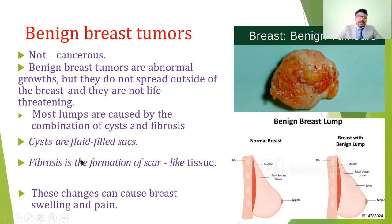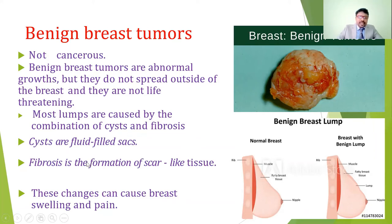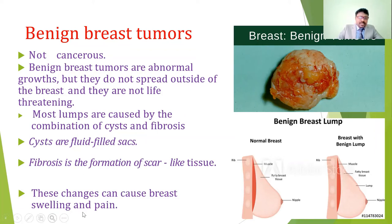Cysts are fluid-filled sacs; fibrosis is the formation of scar-like tissue. These changes can cause breast swelling and pain. Because of this extra growth and compression on breast tissues, tenderness and swelling occur. This distinguishes benign tumors from malignant tumors.